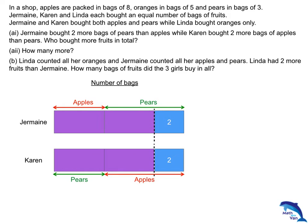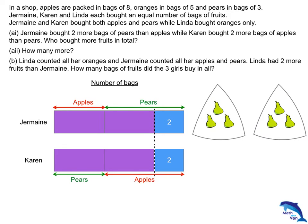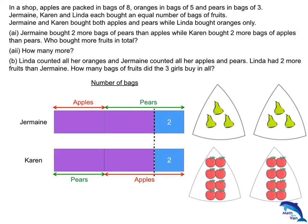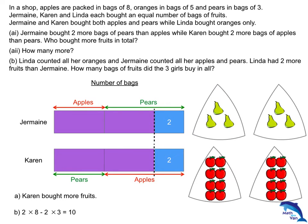Comparing these two models, what is the same? What is common? Take that away. What remains — what is different? As the model highlights, Jermaine would have 2 bags of pears extra, and Karen would have 2 bags of apples extra. So it's obvious who bought more fruits in total — the answer is Karen. How many more? 2 times 8 minus 2 times 3 equals 10.